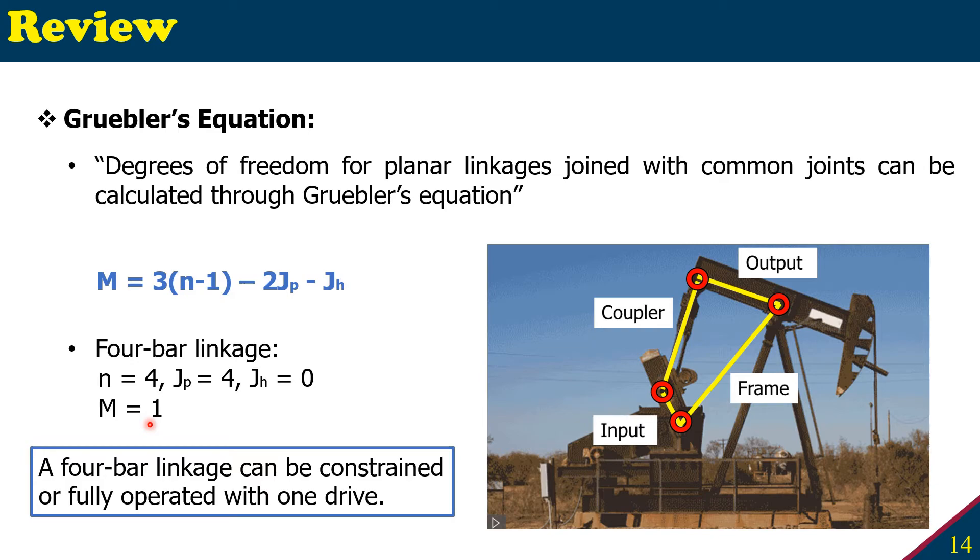What is the application of this? M=1, meaning this 4-bar linkage has 1 degree of freedom, tells us that if you want to make it fully operational, you just need only one drive. Or you can make it a lock mechanism if you constrain only one link.